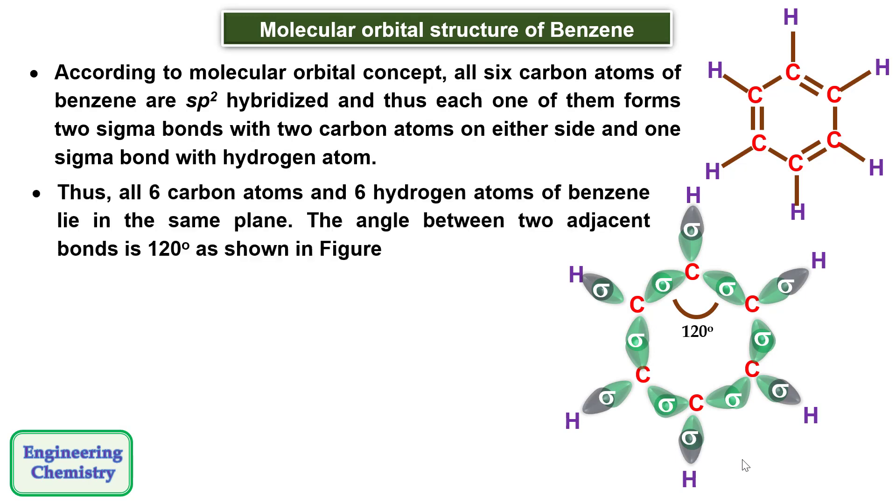Thus all carbon atoms and six hydrogen atoms of benzene lie in the same plane. The angle between the two adjacent bonds is 120 degrees as shown in the figure.